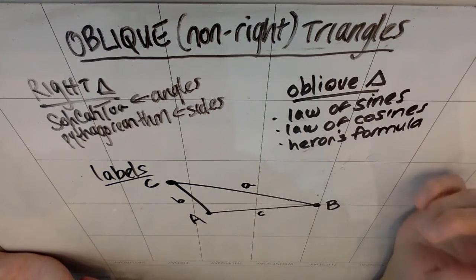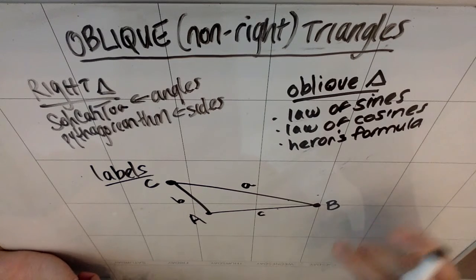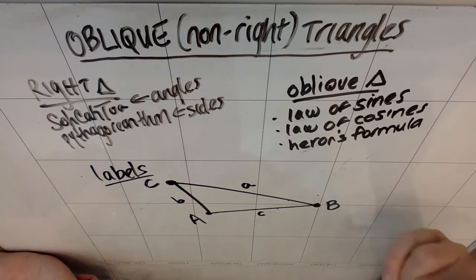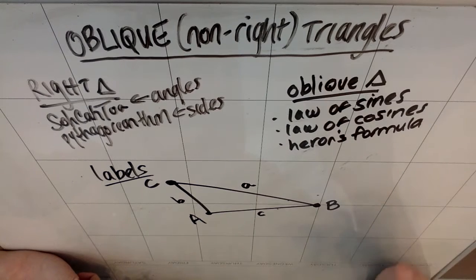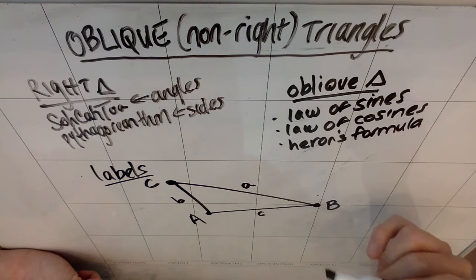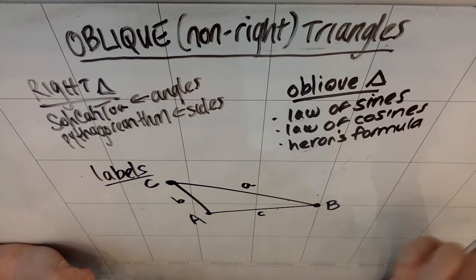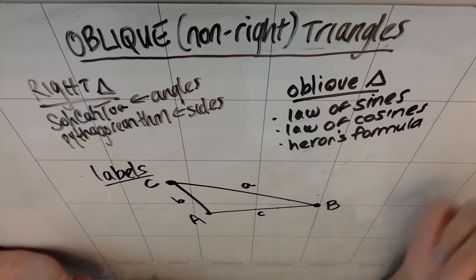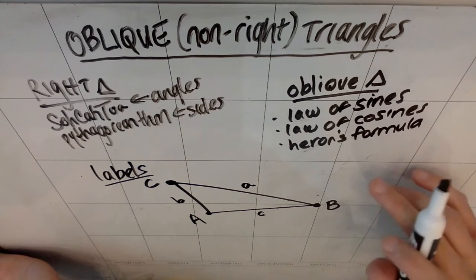So an important piece of information here is that my vertices and my angles are capital letters, and my sides are lowercase letters. So that's true in a right triangle as well. It's true the easiest way to label any triangle. But in this instance, it's going to be more important because there is no right angle.